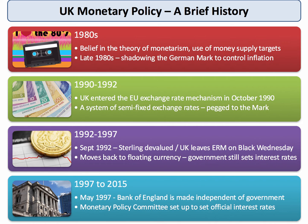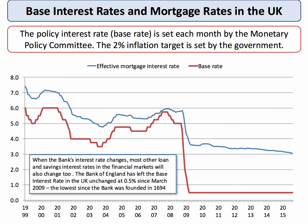Then in 1997, with the election of a new Labour government, the Bank of England was made independent of government. The Bank was given operational independence and a Monetary Policy Committee was set up comprising nine people. It is their job each month to look at the macro economy and consider whether or not to make a change in base interest rates. We'll do a separate topic video on the Monetary Policy Committee and the decisions they take.